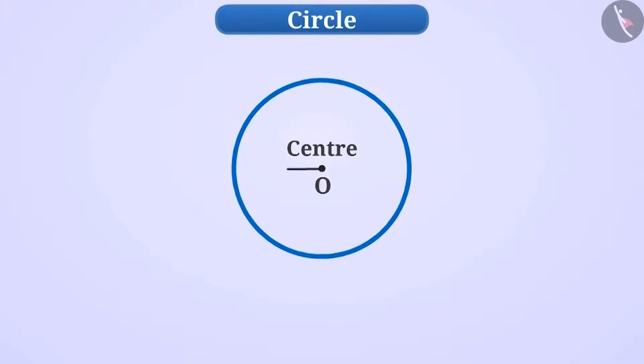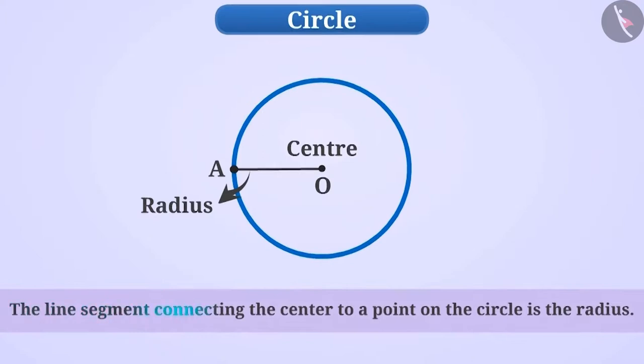The distance from the center to a point of the curve is called radius. Or, we can say that the line segment connecting the center to a point on the circle is the radius. As the line segment OA in the given figure is connecting the center O and the point A on the circle, this is the radius of a circle.